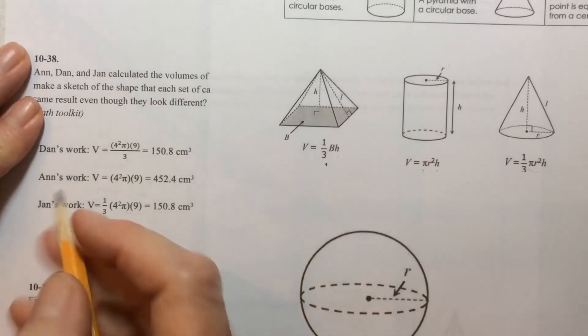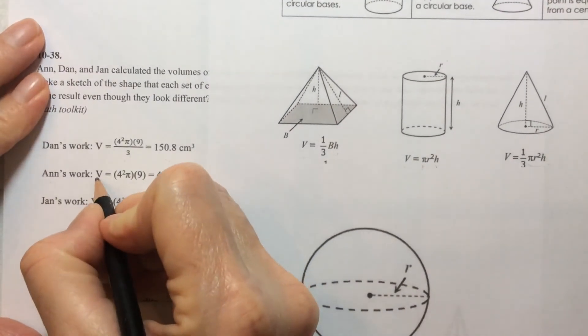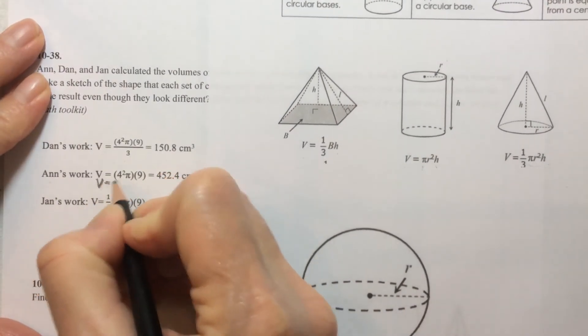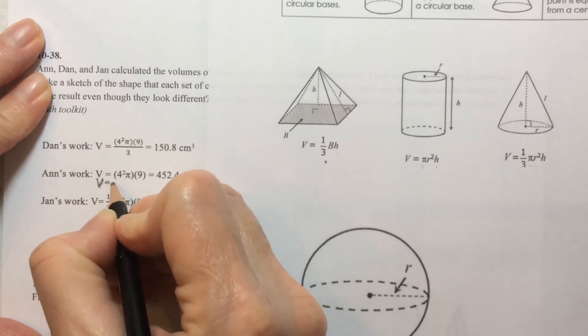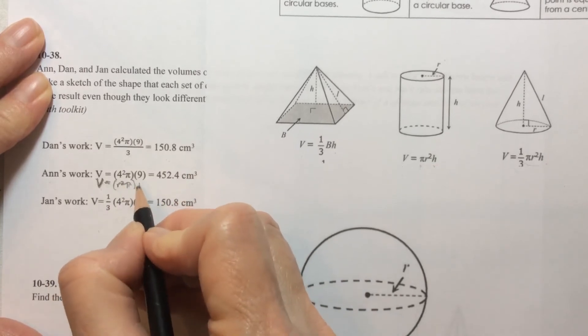And so we can pretty much match up the formula for volume with this by saying r squared times pi times the height. And these match up with these numbers.